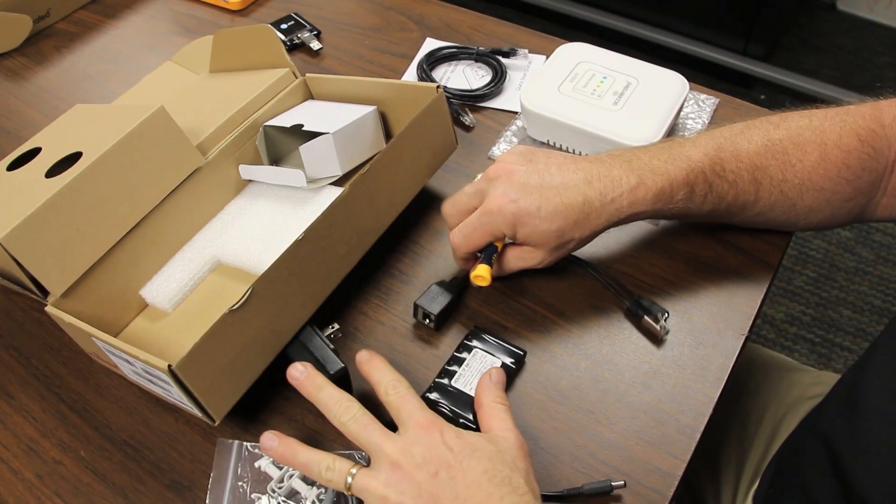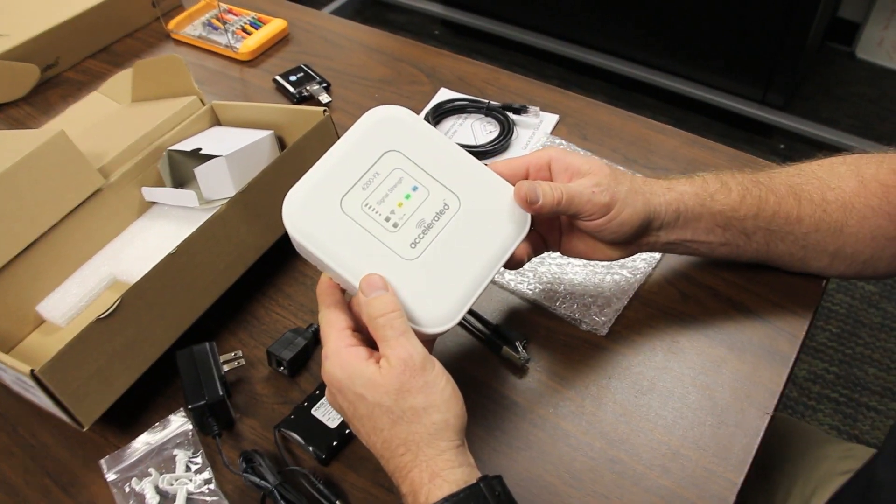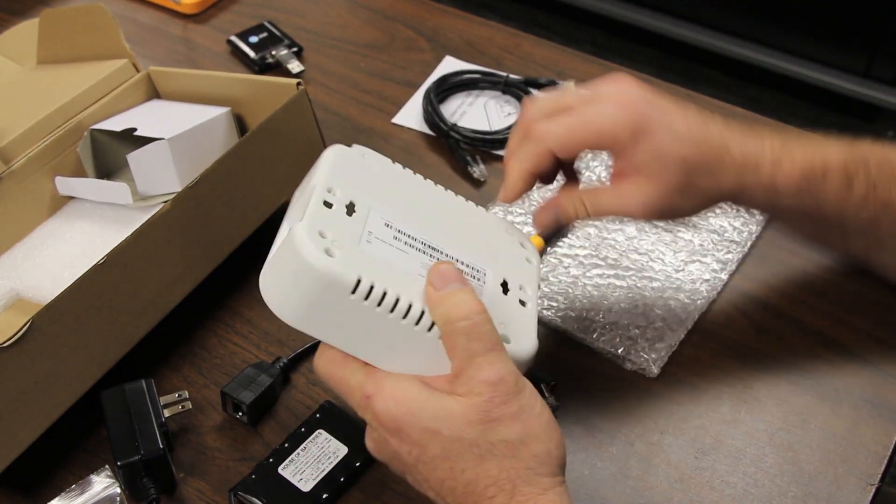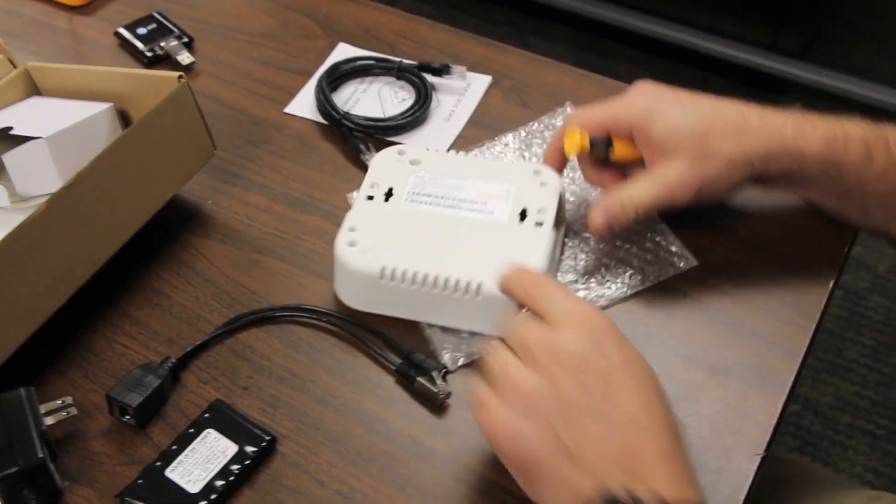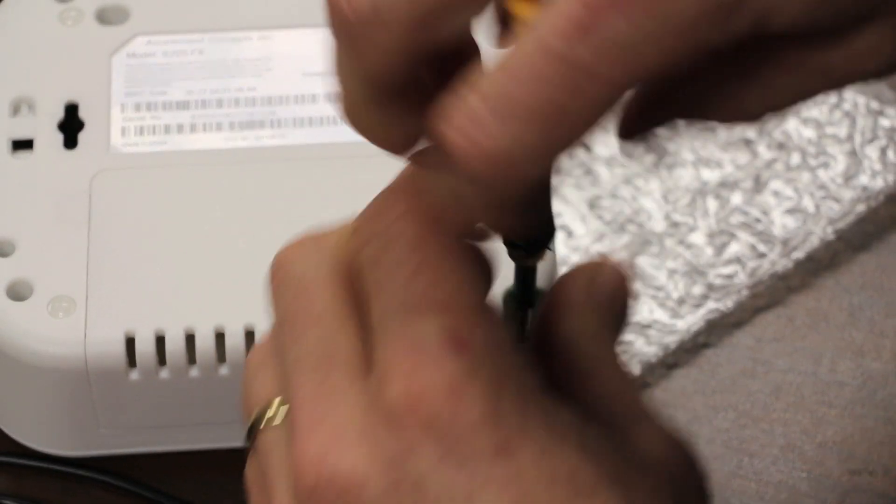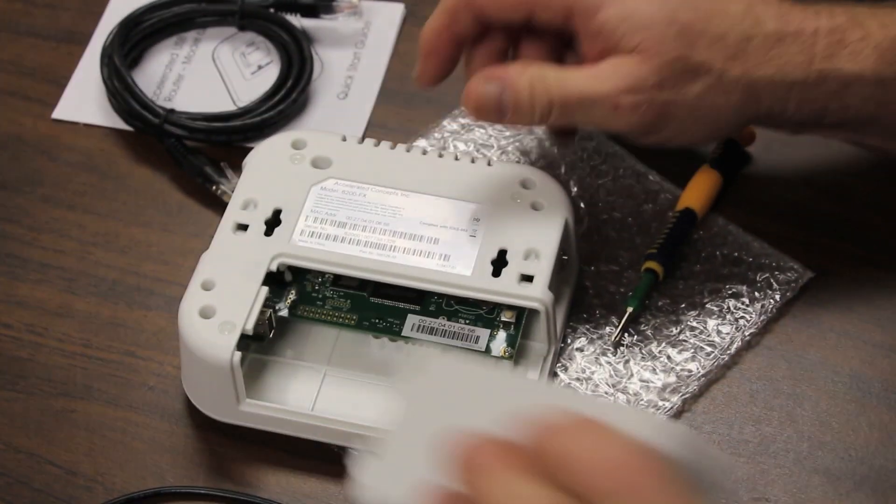Let's open the unit up. The unit itself has no cellular capabilities without a USB-based USB radio. First thing we're going to do is take a standard Phillips head screw and remove that.